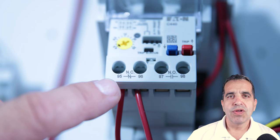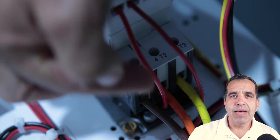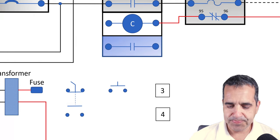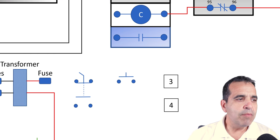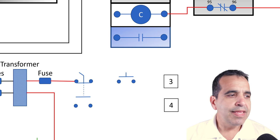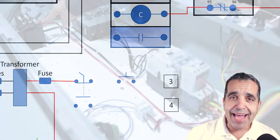From terminal 95 on the overload, the wire is going underneath the starter and coming up and feeding one side of our motor starter coil. Then from our fuse, we're feeding our selector switch, our hand-off-auto selector switch.